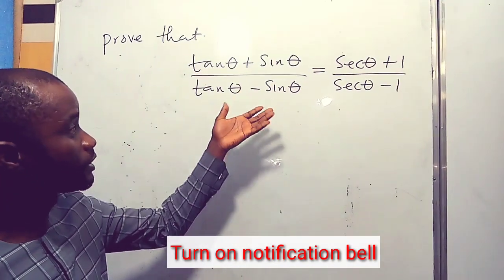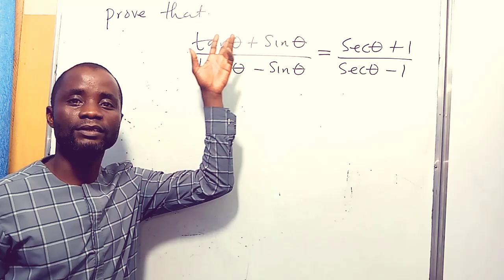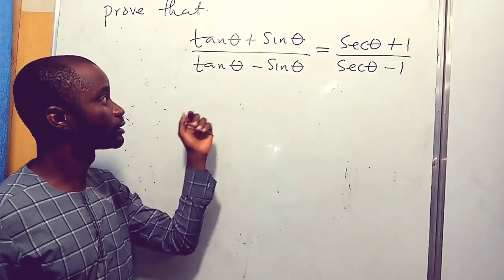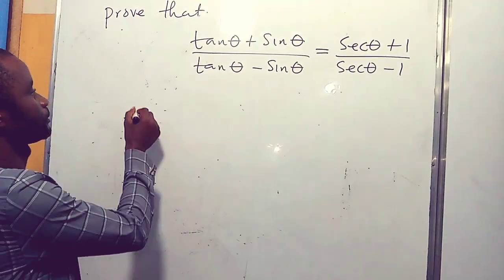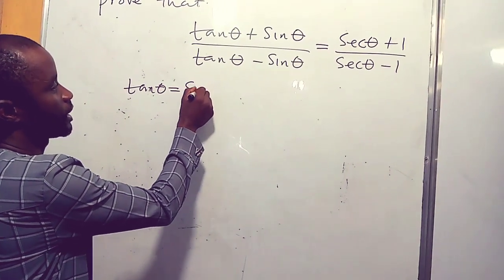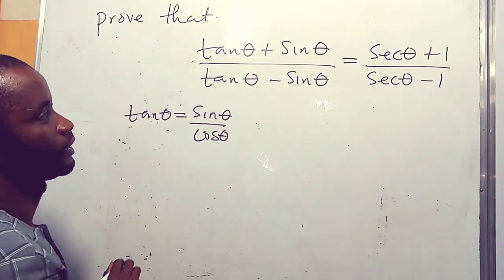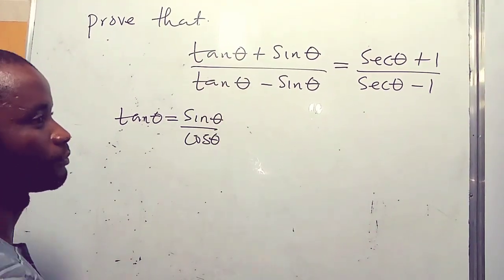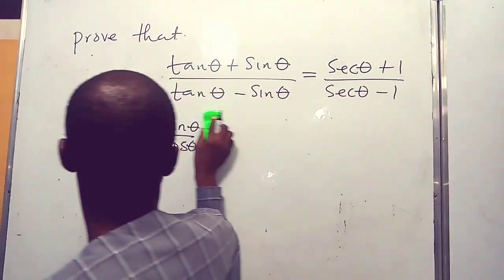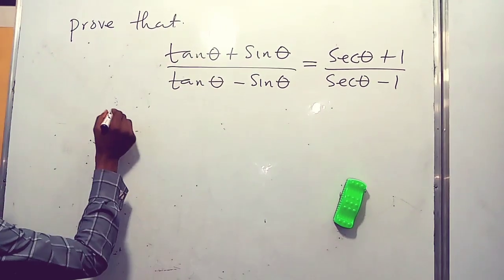We're going to use a simple identity: what is tan? Tan is sine over cosine, so tan theta equals sine theta over cos theta. We input this value into the expression and use simple mathematical knowledge to prove it. Let's start.